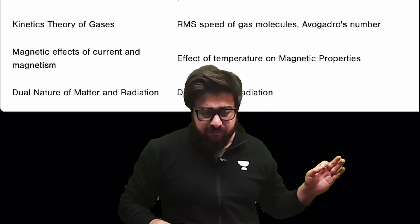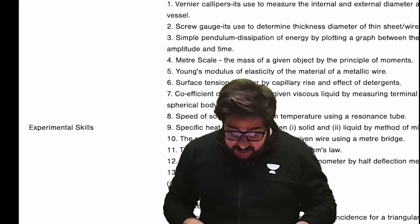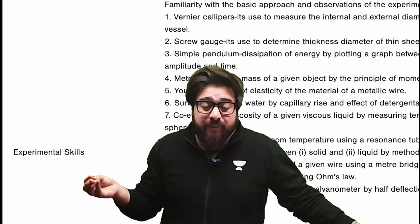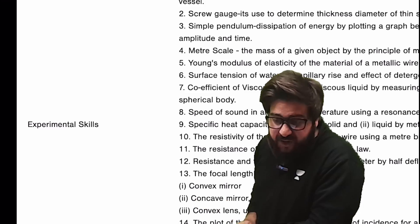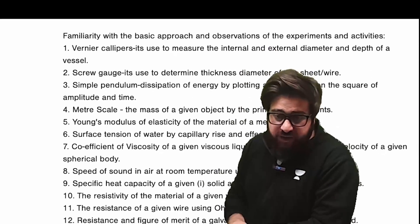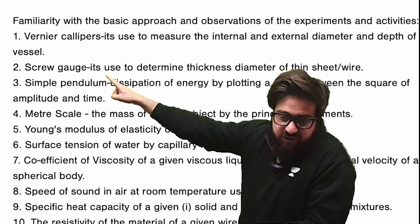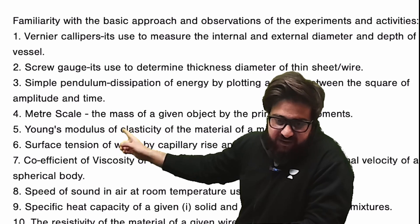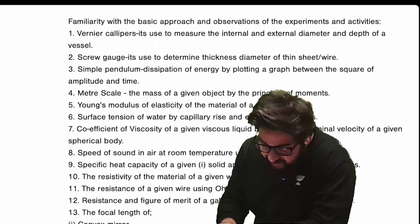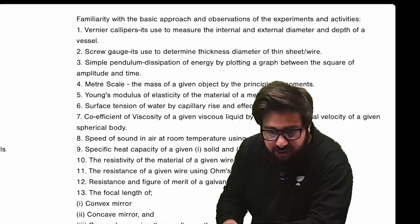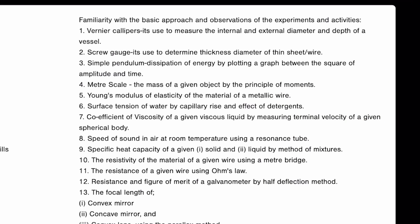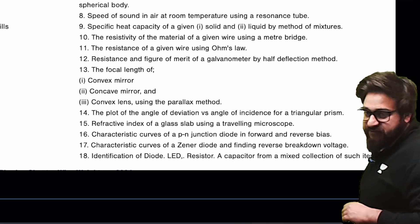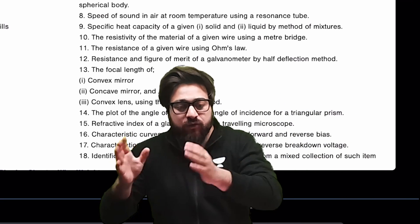Now, the experimental skills — if you guys check the syllabus, you'll find a lot of topics which appear absent, but in actual reality you can find those in the experimental skills section. Like you have vernier calipers, screw gauge, simple pendulum, meter scale, Young's modulus of elasticity — everything over here. You can take a screenshot of this particular topic so that you'll get to know each and every single thing about what you are supposed to learn and what you are supposed to leave.